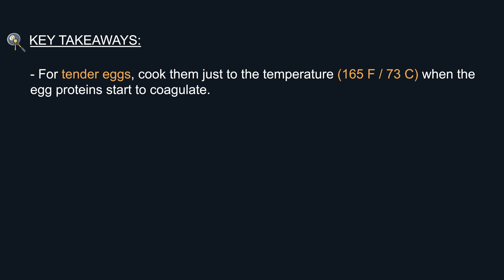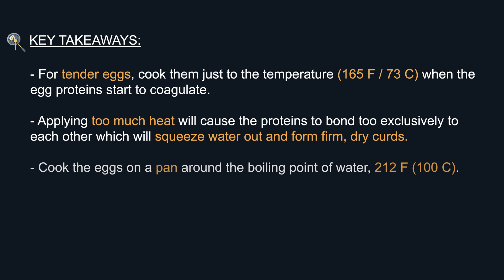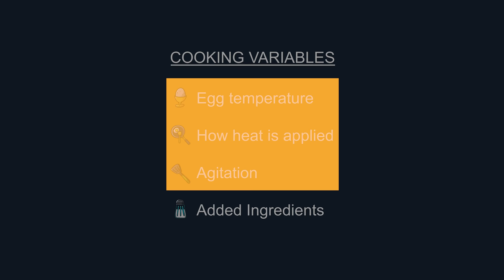Here are the key takeaways on these three variables. One: for tender eggs, cook them just to the temperature when the egg proteins start to coagulate. Two: applying too much heat will cause the proteins to bond too exclusively to each other, which forms hard curds and squeezes the water out. Three: cook the eggs on a pan around the boiling point of water and use water or butter to help regulate that pan temperature. And four: more agitation while enough heat is applied means smaller curds.